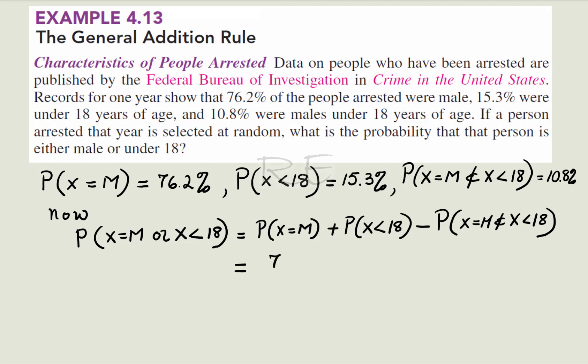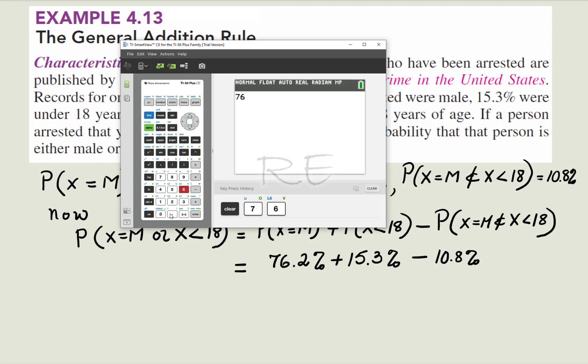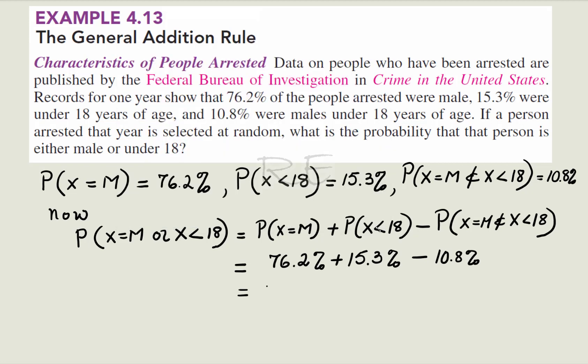Therefore, simple arithmetic: 76.2% plus 15.3% minus 10.8%. We'll do it quickly with our calculator. 76.2% plus 15.3 minus 10.8. We get 80.7%.